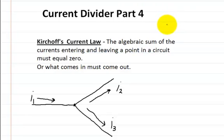In this video, I'm mainly going to be talking about Kirchhoff's Current Law. What is it? We've actually been using it in some of the previous videos, but if you haven't seen those, Kirchhoff's Current Law, the fancy way to say it is the algebraic sum of the currents entering and leaving a point in a circuit must equal zero.